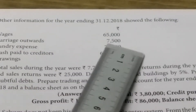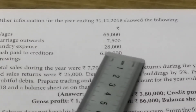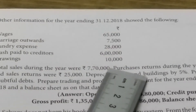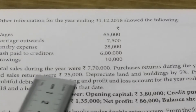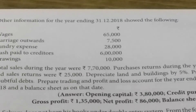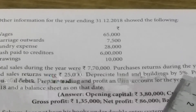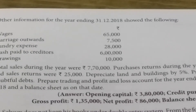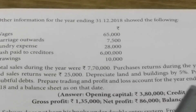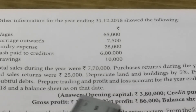Wages 65,000. Carriage outwards 7,500. Sundry expenses 28,000. Cash paid to creditors 6,00,000. Drawings 10,000. Total sales during the year 7,70,000. Purchase returns during the year 30,000. Sales returns 25,000. Depreciate land and building by 5%. Provide 1,500 for doubtful debts. Prepare trading profit and loss account for the year ended 31st December 2018 and a balance sheet as on that date.